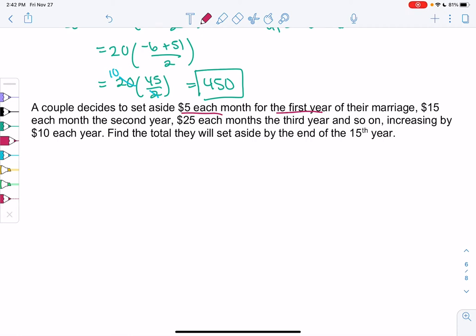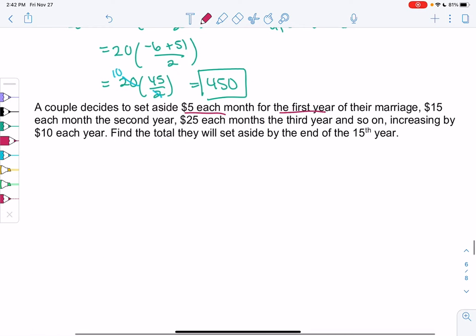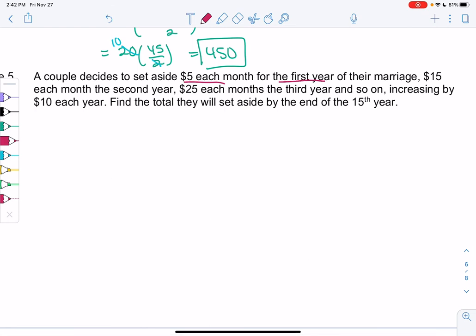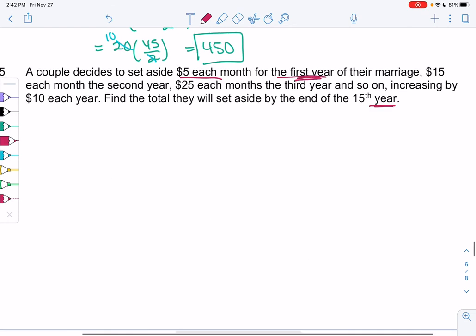First, maybe let's figure out the pattern and then we can figure out the total. So let's see, the first year, let's do it by years. So they're not setting aside $5 the first year.